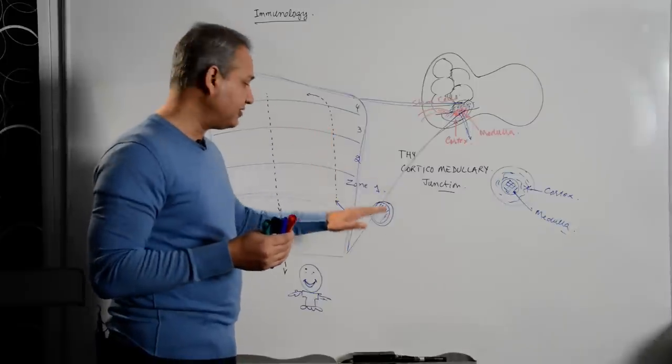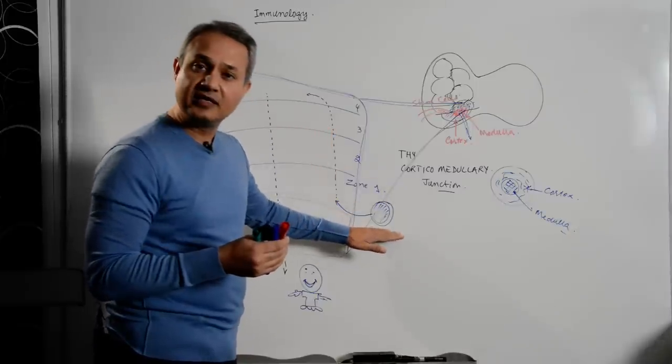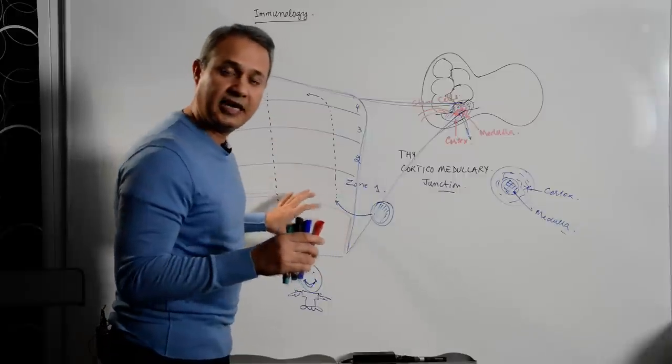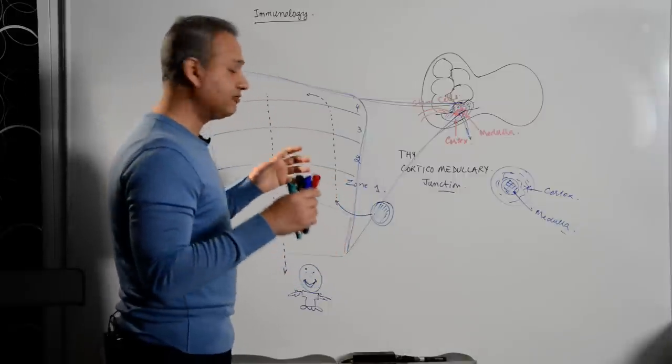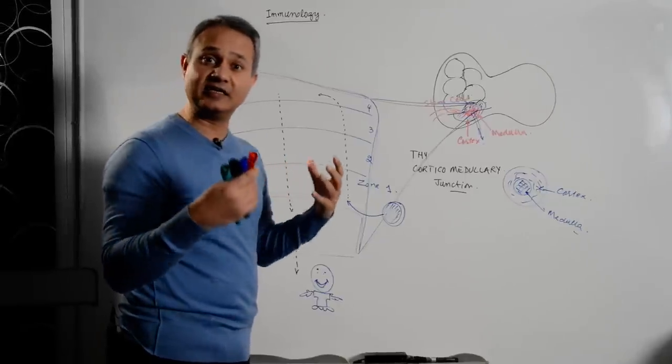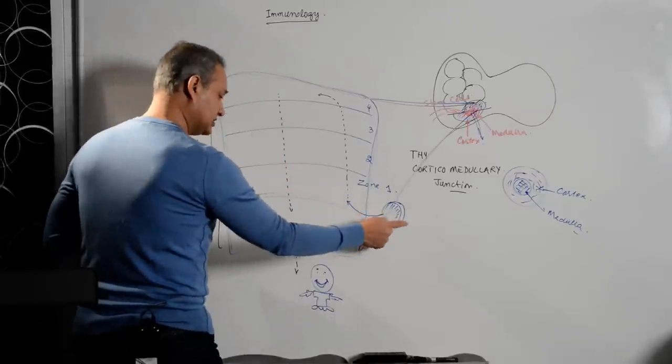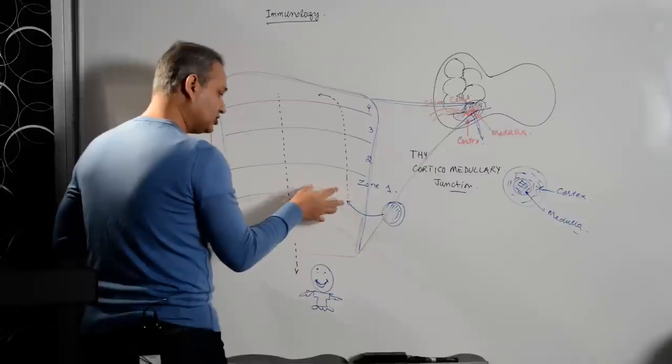So thymocyte is slightly different from a stem cell in the terms that as it traverses the thymus, as it moves along in the thymus, it will be matured up and it will be selected to do the good work. Thymocyte stem cell entered the thymus, became thymocyte zone one.